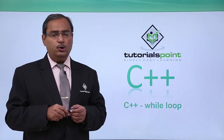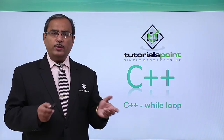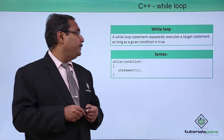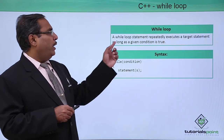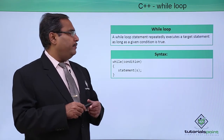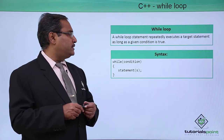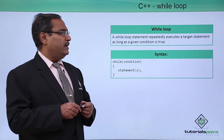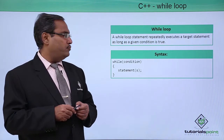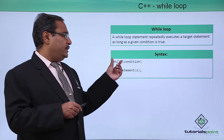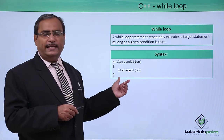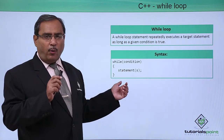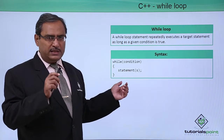C++ while loop — how to execute a while loop in C++ coding. A while loop statement repeatedly executes a target statement as long as a given condition is true. This is the basic syntax or the grammar of writing the while loop statement.